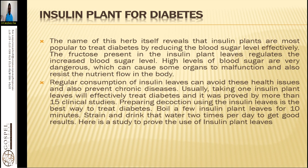The name of this herb reveals that insulin plants are most popular for treating diabetes by reducing blood sugar levels effectively. The fructose present in the insulin plant leaves regulates increased blood flow levels. High levels of blood sugar are very dangerous, as they can cause some organs to malfunction and resist nutrient flow in the body. When sugar is high in your system, cells are not able to participate in lock processes, and reception processes are lowered.